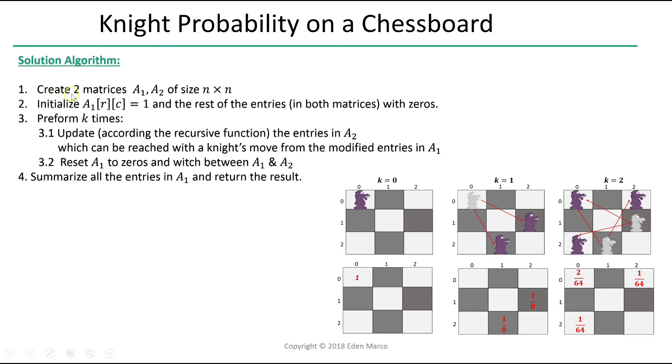In step 1, create two matrices, A sub 1, A sub 2, of size n by n. The reason we create two matrices is because instead of using a three-dimensional array, we will use two two-dimensional ones, A sub 1 and A sub 2, storing the result of the two most recent layers we are working on.